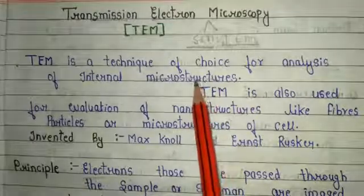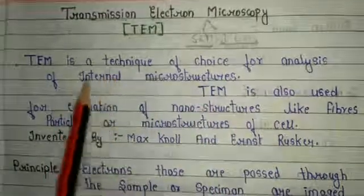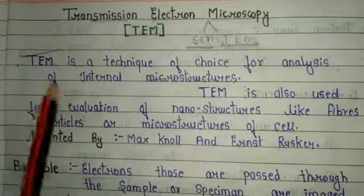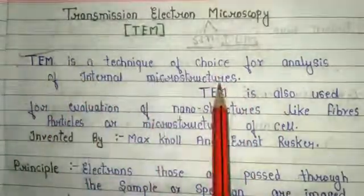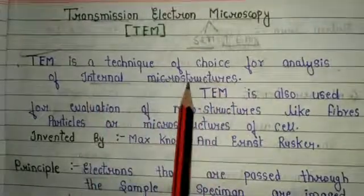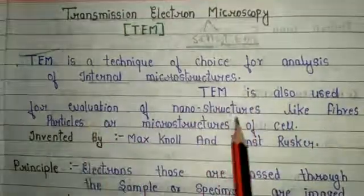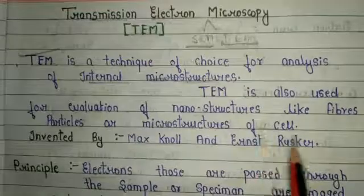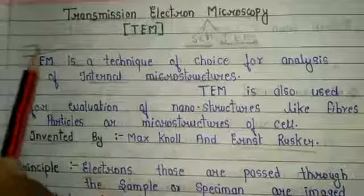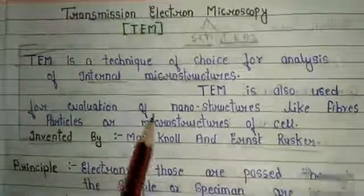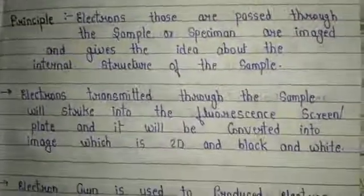So transmission electron microscope is very important to get a magnified image. The basic introduction is that TEM is a technique of choice for analysis of internal microstructure. TEM is also used for evaluation of nanostructures like fibers, particles, or microstructures of cells. It was invented by Max Knoll and Ernst Ruska.